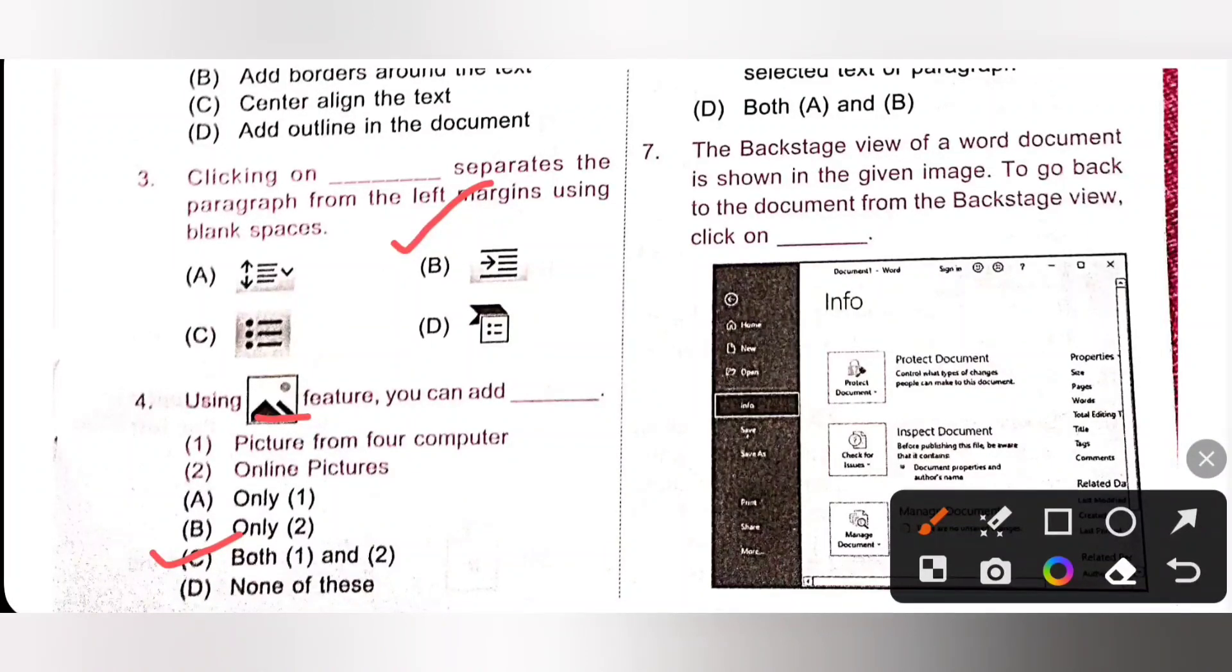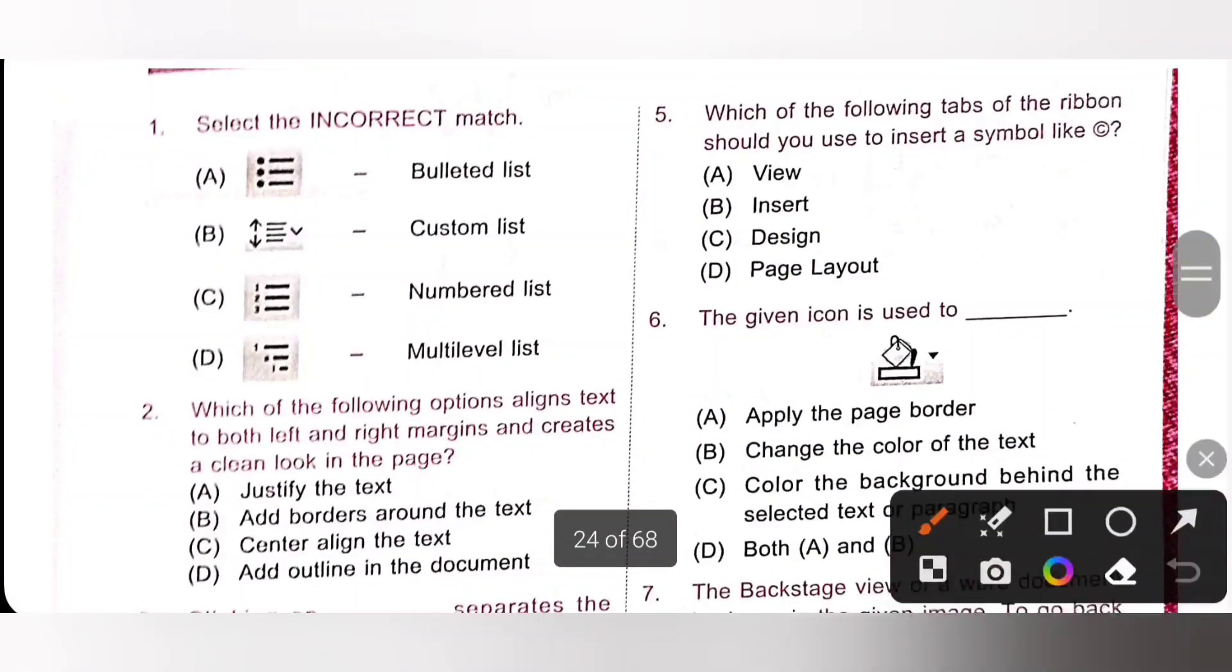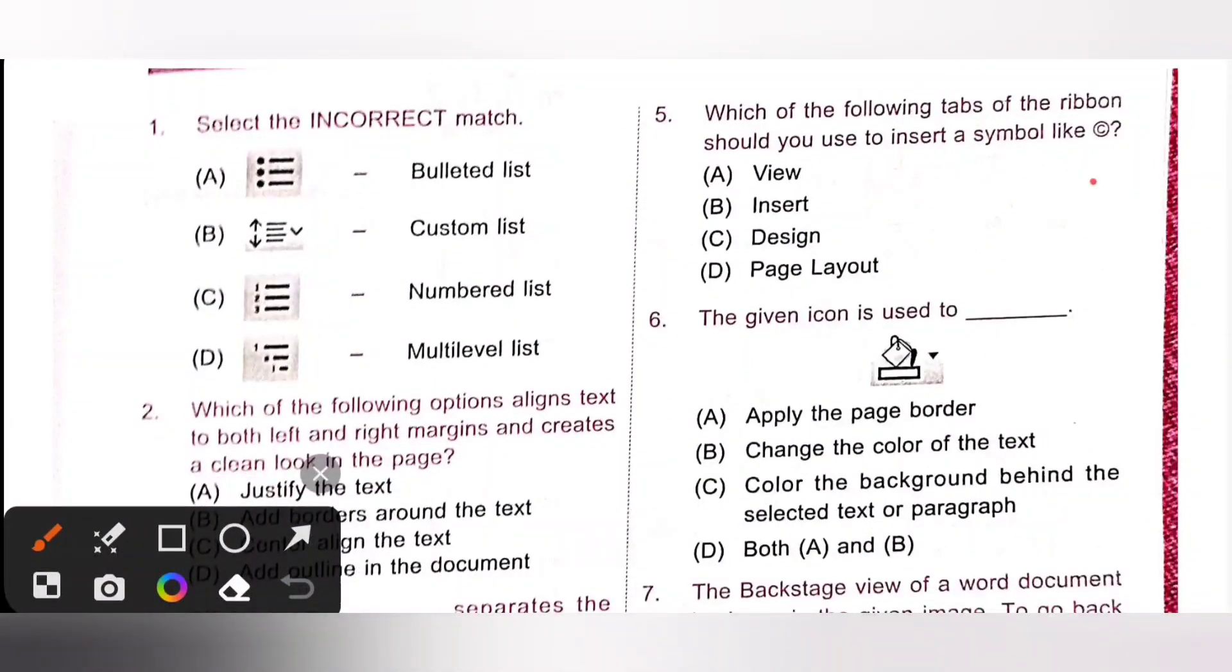Fifth one, which of the following tabs of ribbon should you use to insert a symbol like copyright? So we will use insert tab. The symbol given in the question is copyright sign. We can find it under symbol drop down list of symbol groups under insert tab. So option B is the correct answer.